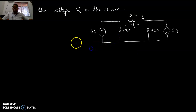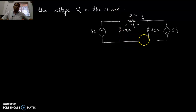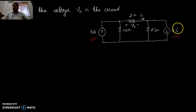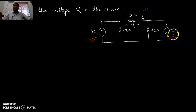Question number nine: find out the voltage V0 in the circuit. Watch carefully — in the circuit you have one current source here and another current source here; one of these sources is a dependent source. If I1 is there somewhere in the circuit, there must be I1 — yes, it is there. So whatever the current I1 is, that is what it depends on.